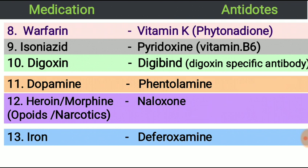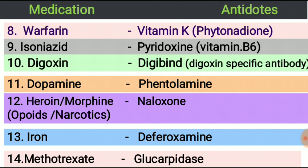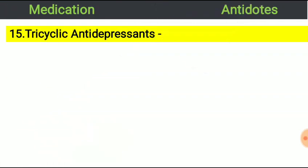Next, methotrexate. Methotrexate is used as a chemotherapy agent and immune system suppressant to treat cancers, autoimmune diseases, ectopic pregnancy, and medical abortion. The antidote of methotrexate is glucarpidase.